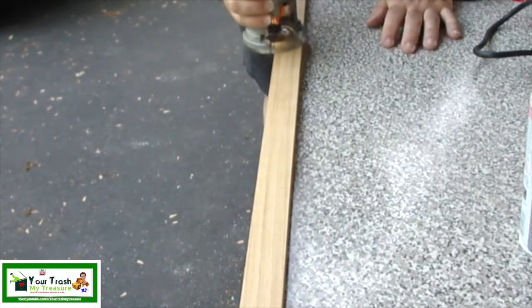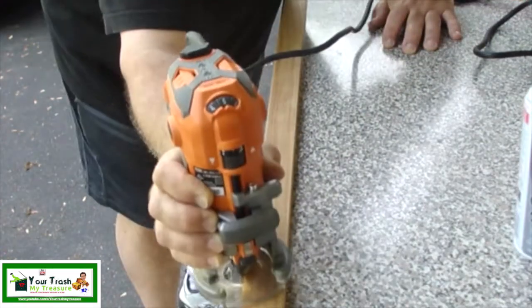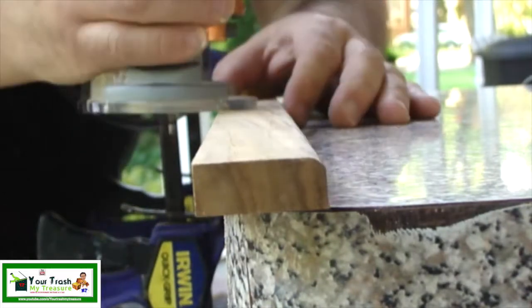Now back to the shelves. Using a router, I rounded over the edges of each strip that I'll be using for the shelves.